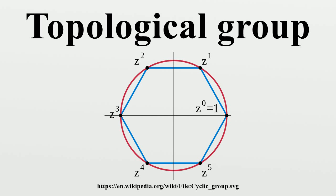Formal definition: A topological group G is a topological space and group such that the group operations of product and taking inverses are continuous functions.